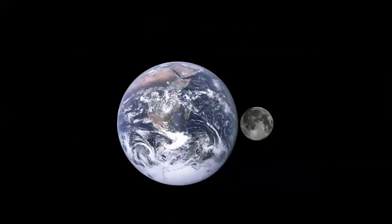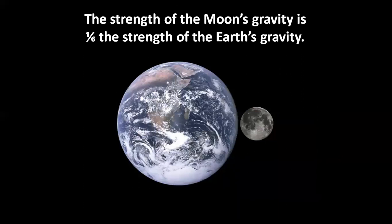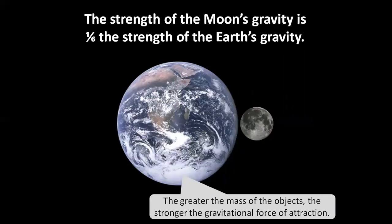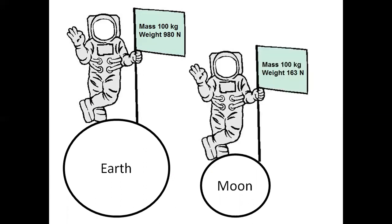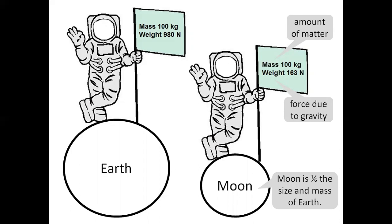The moon has its own gravity. The strength of the moon's gravity is one-sixth the strength of the earth's gravity. The greater the mass of the object, the stronger the gravitational force of attraction. An astronaut on earth with a mass of 100 kilograms has a weight of 980 newtons. The same astronaut on the moon has a mass of 100 kilograms. His mass doesn't change, because the amount of matter he's made of doesn't change. But his weight is 163 newtons. It's much less, because the force due to gravity on the moon is less. The moon is one-sixth the size and mass of earth. And so the weight of the astronaut is one-sixth his weight on earth. This also means the astronaut could jump six times higher on the moon than on the earth.